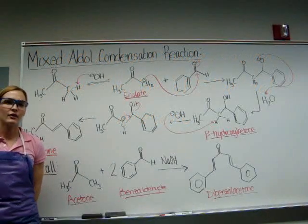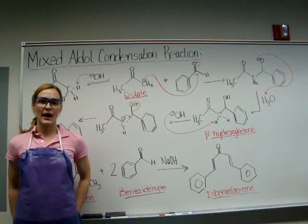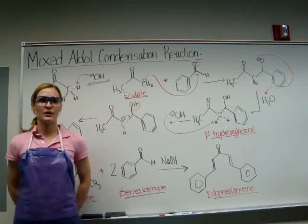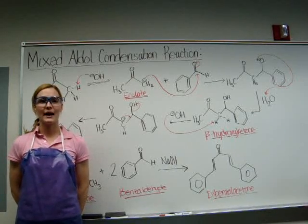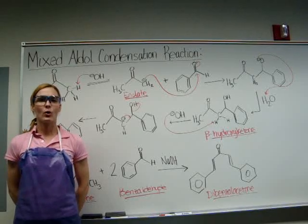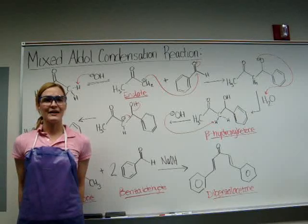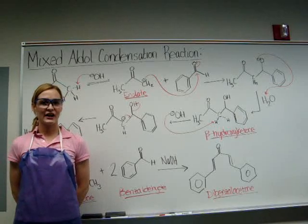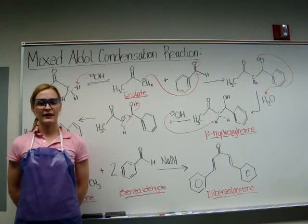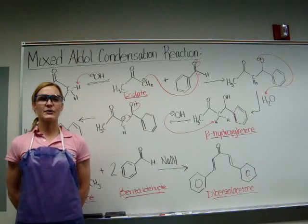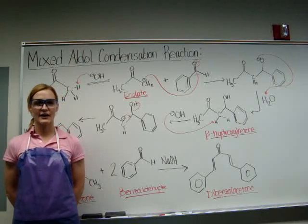We will be doing a mixed aldol condensation reaction. A mixed aldol condensation reaction is an organic reaction in which an enolate ion reacts with a carbonyl compound to form either a beta-hydroxy aldehyde or a beta-hydroxy ketone. This step is followed by dehydration to give a conjugated enone. An example is the reaction of an aldehyde with a ketone using sodium hydroxide as the base.